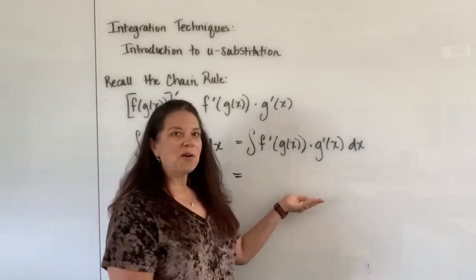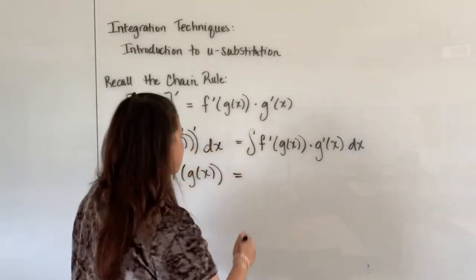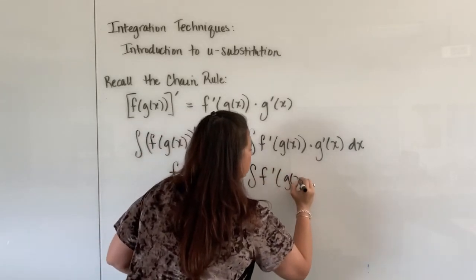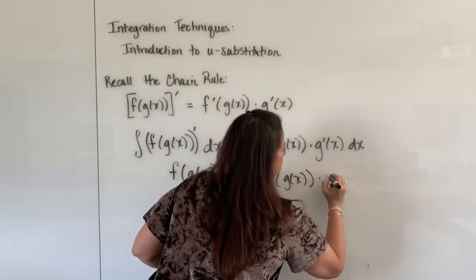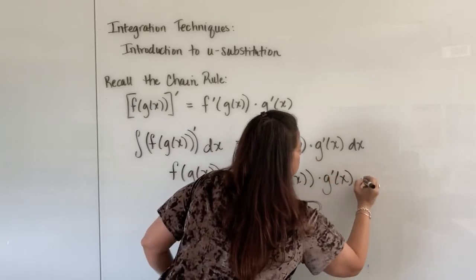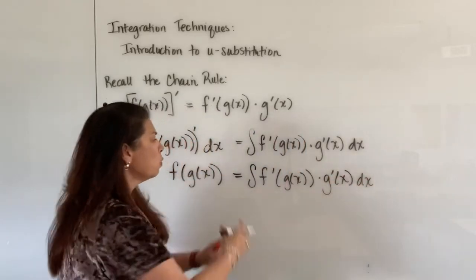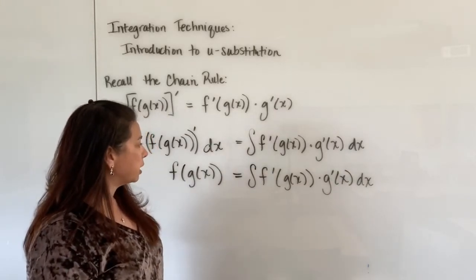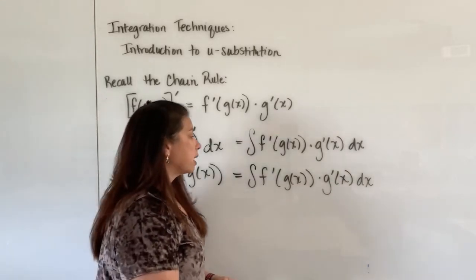On the right side, though, I get exactly what you see here. I have the integral of f prime of g of x times g prime of x dx. We just keep that as is. We can't right now do anything with this notation.